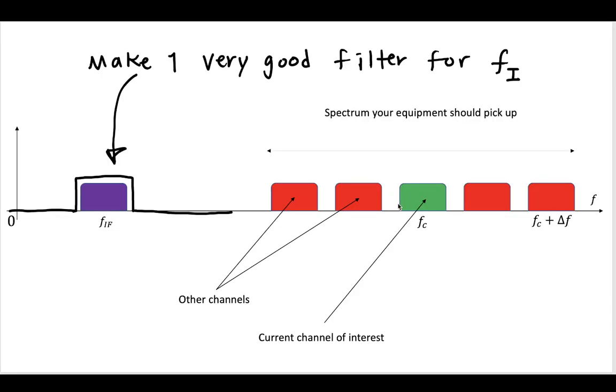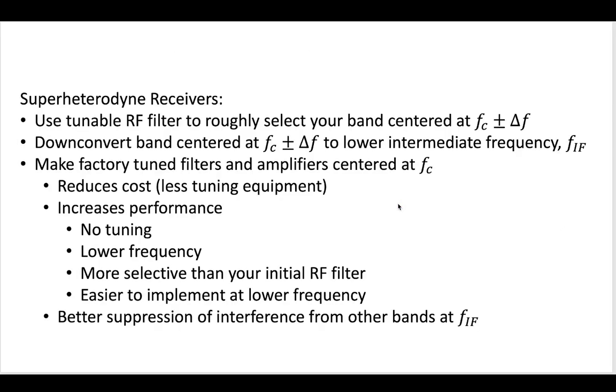So ones that, you know, your human dial, you don't have to use a dial or hand tune this. You have factory-tuned filters that filter and amplify at that lower IF. And what this is going to do is it's going to reduce cost. You need less tuning equipment. Because you have a really good filter at that intermediate frequency, it's going to increase your performance because you aren't tuning.